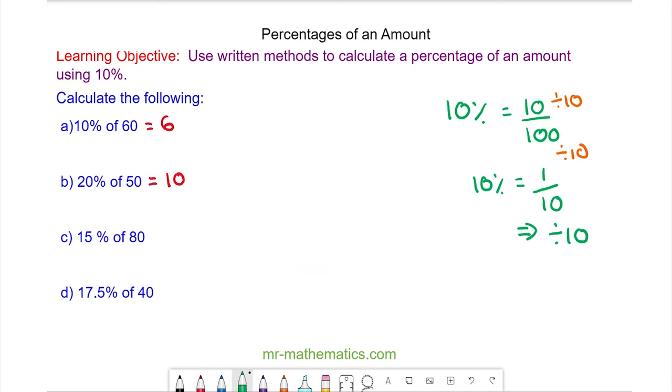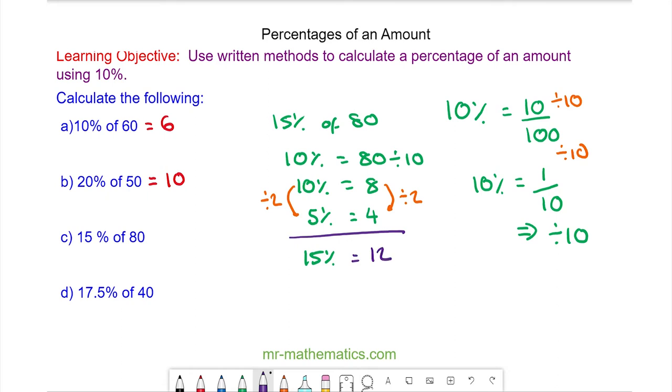For question c we're going to work out 15% of 80. Again we start off with 10% which is 80 divided by 10. 80 divided by 10 is 8. So that is the value of 10%, but we want 15% so we need to add on another 5%. 5% is 10% divided by 2. So we divide the 8 by 2 and we get 4. To work out the 15% we add the 8 and the 4 together and we get 12. So 15% of 80 is equal to 12.